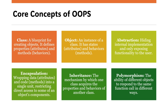The fifth is inheritance. Inheritance is the mechanism by which one class acquires the properties and behaviors of another class. And the last one is polymorphism — polymorphism is the ability of different objects to respond to the same function call in different ways. So this is all about OOP concepts in Java. Let's meet in the next video.